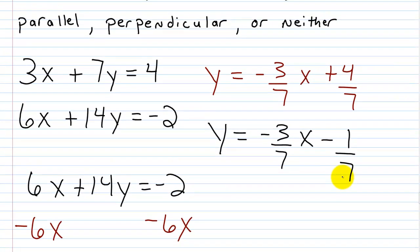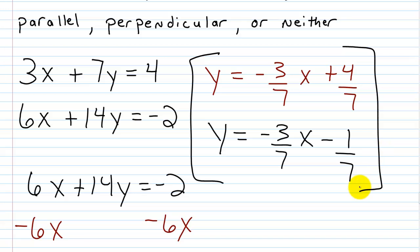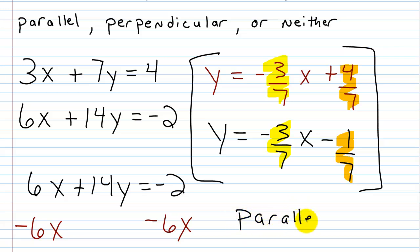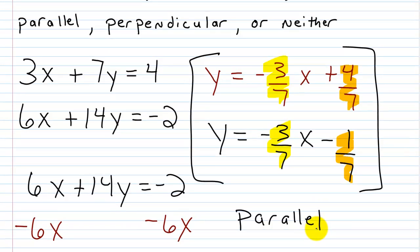Now that we have our equations in slope-intercept form, it's pretty easy to compare. The slopes are the same — in each case it's negative 3/7. And we have different y-intercepts, so we know it's not the same line. Therefore, these lines are parallel, because the slopes are the same.